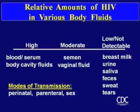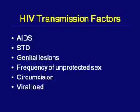HIV transmission risk factors include AIDS stage (very high viral load), STDs or genital lesions that disrupt membrane integrity, frequency of unprotected sex, multiple partners, and circumcision status. Circumcision is associated with reduced HIV transmission because the foreskin has high numbers of CD4 receptors presenting an exposed surface for viral binding.